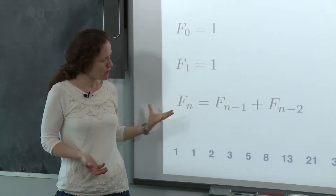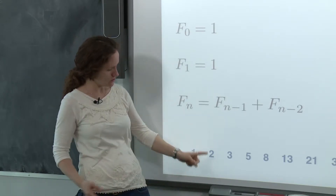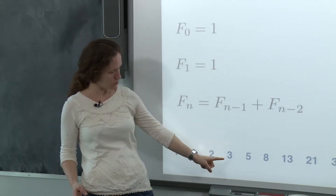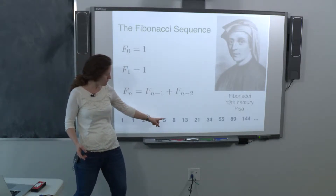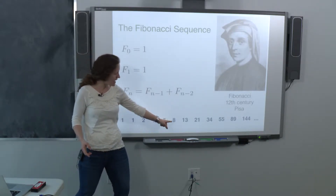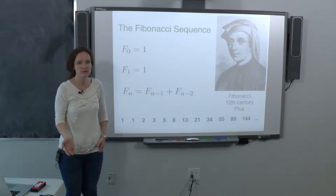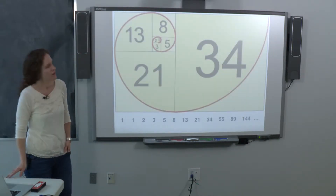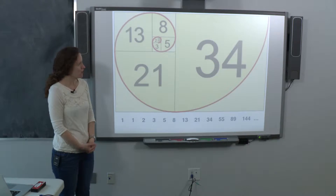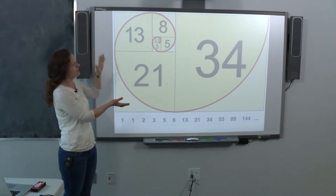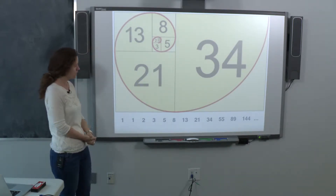Following this recipe starting with 1 and 1, you get 2, then 2 plus 1 is 3, 3 plus 2 is 5, 5 plus 3 is 8 — you generate this infinite sequence of numbers. From the Fibonacci numbers, you can write down a geometric object associated with something called a Fibonacci spiral.